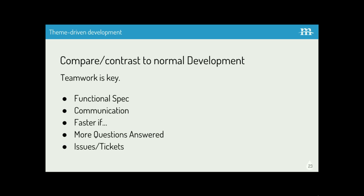From the back-end perspective: teamwork is key, especially with theme-driven development — it's really important to have front-end and back-end tightly integrated with a lot of communication. A functional spec is not optional. When you're building out your components on the front-end, you need to already know how that's going to be reflected in the back-end. You need to have that communication going up front.